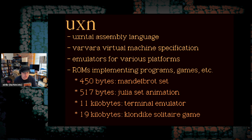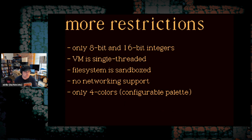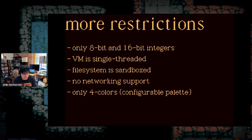The language and virtual machine are intentionally very limited. Additional limitations include: built-in data types are just 8 and 16-bit integers, the VM is mostly single-threaded, filesystem access is sandboxed to the working directory only, no built-in networking support, and a four-color display with configurable colors. These limitations do constrain the types of programs which are a good fit for UXN, but they can also be freeing. The original Rogue was limited to monochrome ASCII characters on an 80 by 24 character display, so UXN represents a significant upgrade over the original roguelike.